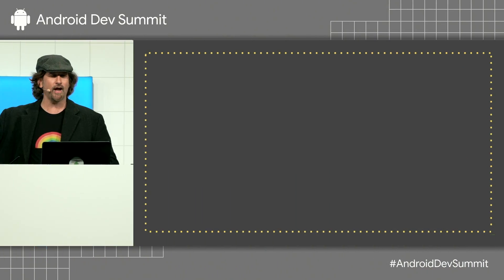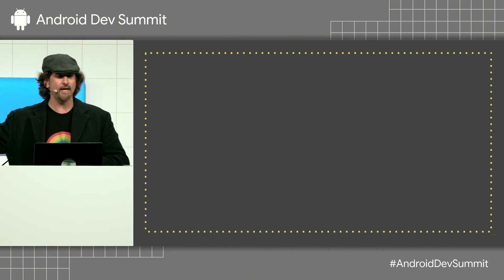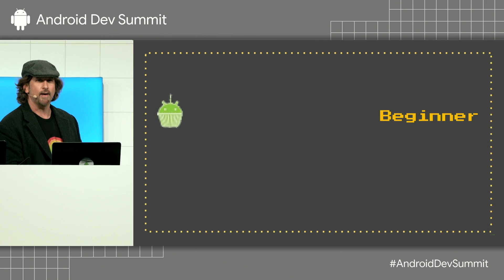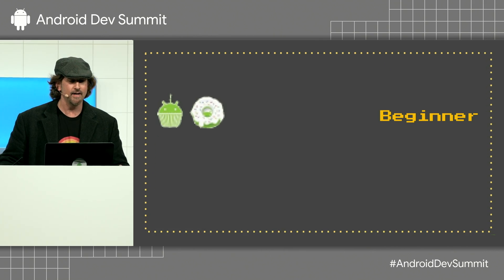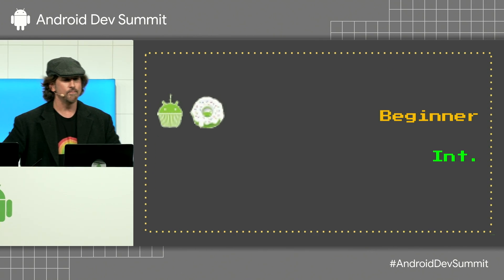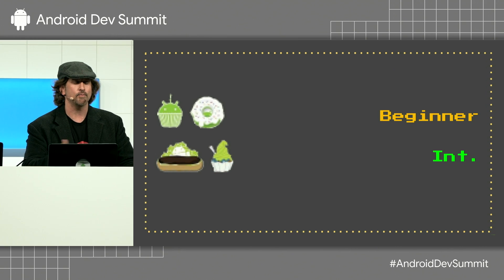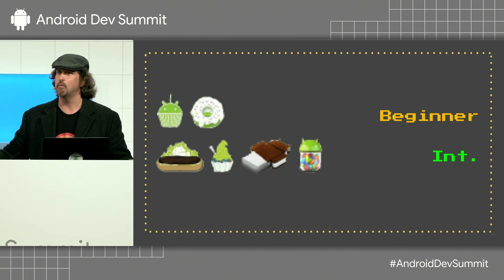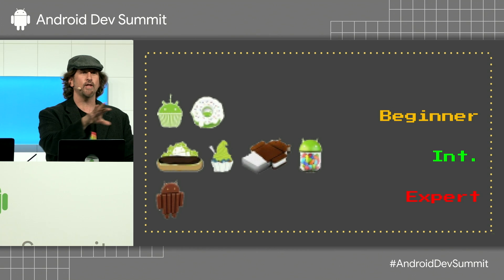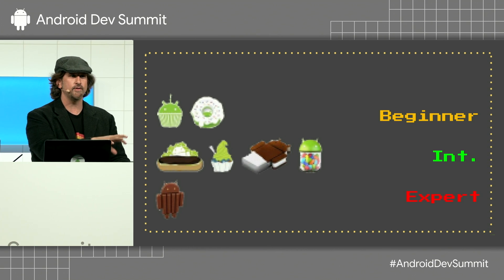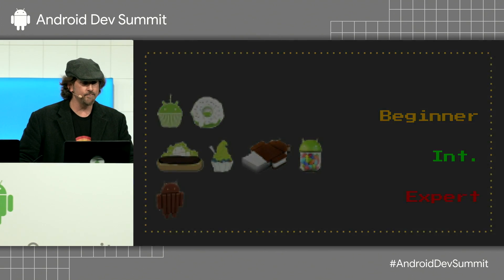The one thing I love about data binding is you can actually choose how much you want to use it. At the beginner level, you get some immediate benefits like avoiding FindViewById. At the intermediate level, you get things like custom binding adapters and observability, while at the expert level, we have two-way data binding, which allows you to apply observability not only from data to UI, but also from UI to data.